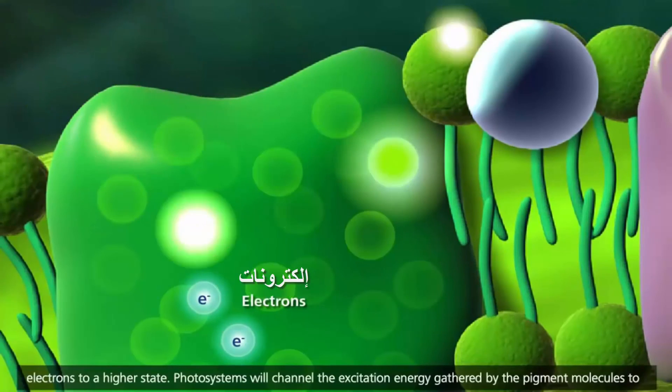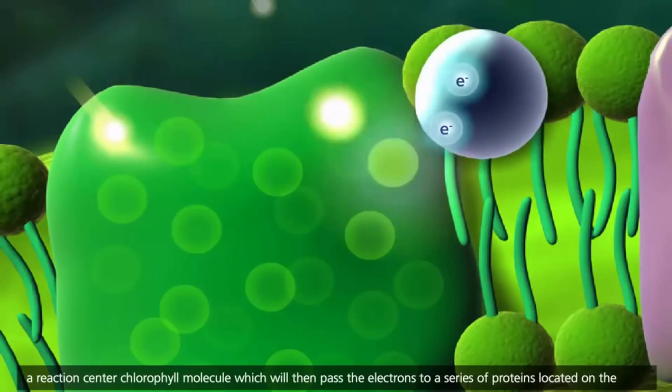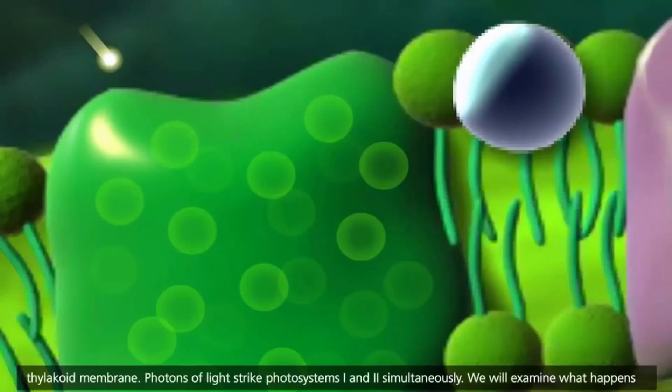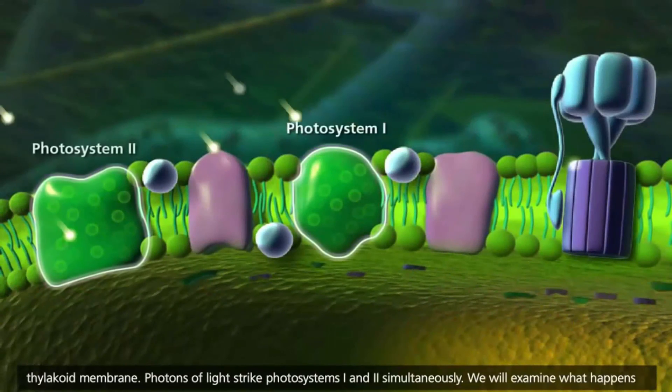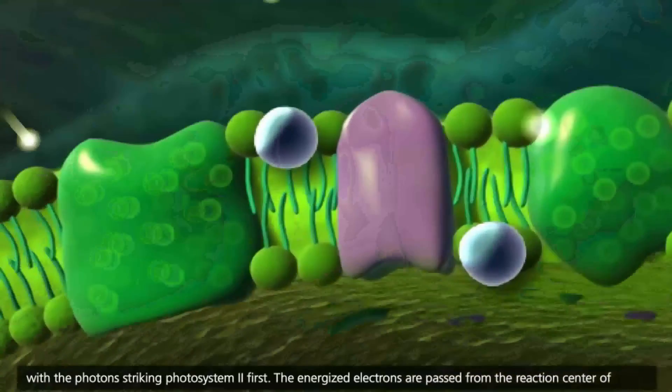Photosystems will channel the excitation energy gathered by the pigment molecules to a reaction-center chlorophyll molecule, which will then pass the electrons to a series of proteins located on the thylakoid membrane. Photons of light strike photosystems I and II simultaneously. We will examine what happens with the photons striking photosystem II first.